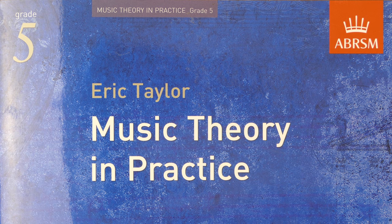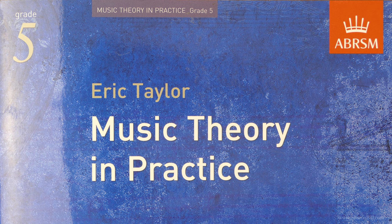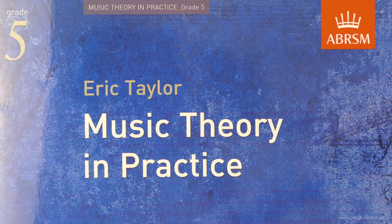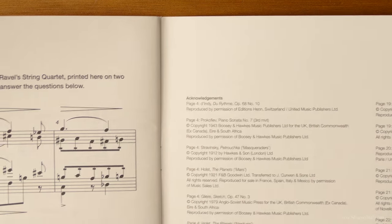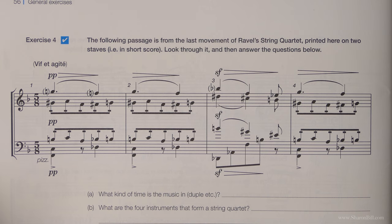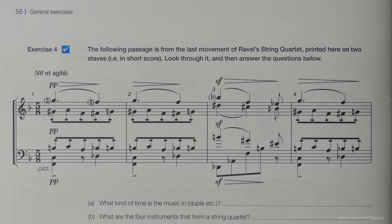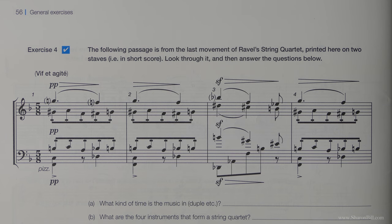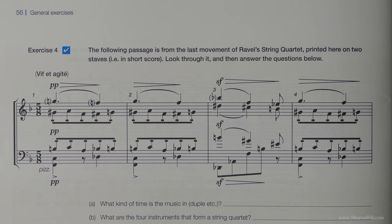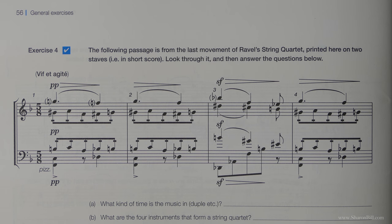Now we're going to crack on with the last of the general exercises in grade five. This is the very last part of this workbook. If you turn with me to page 56, the very back of your book, you'll find general exercise four. We've been using these as a revision exercise to refresh your memory on topics that you might have covered as far back as grade one. Remember that this is an accumulation of everything you've covered in grades one, two, three, four and five.